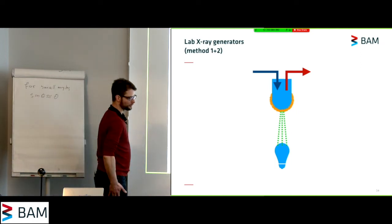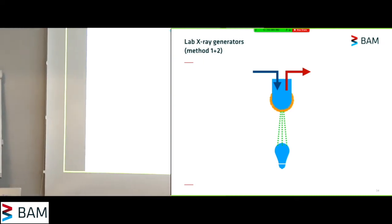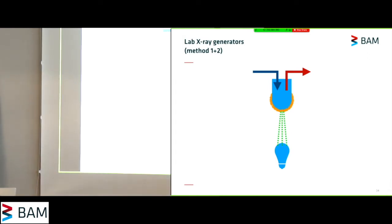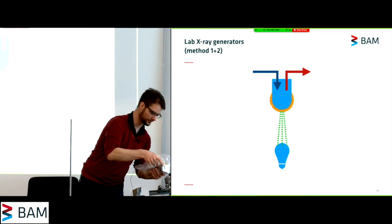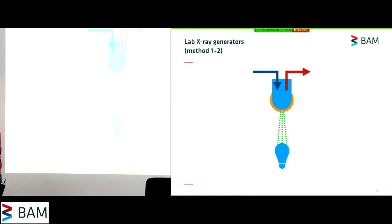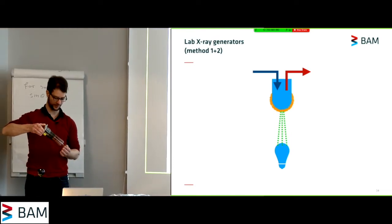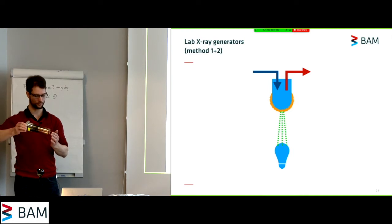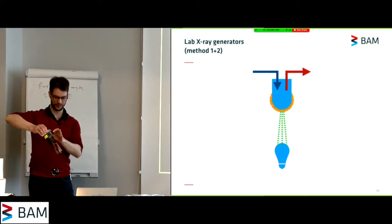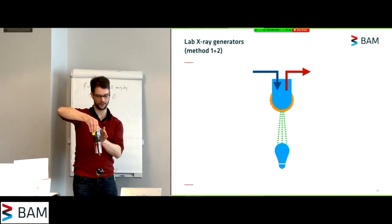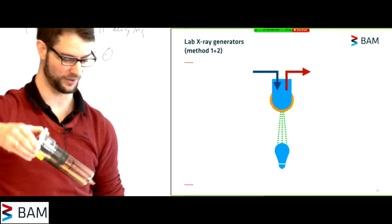So, in the lab, one of the most common X-ray generators you will see is still using the Coolidge tube. And I've got one here. I don't know whether people online can see it. But this is one of the X-ray tubes from our X-ray generator. I'll have to be a little bit careful here because it is essentially a vacuum tube. I hope this is visible on one of the camera streams. So it is a vacuum tube, a glass vacuum tube, which contains a cathode on the inside and an anode.